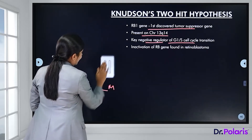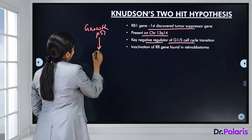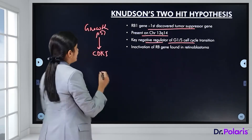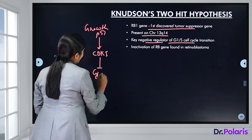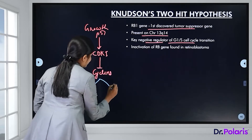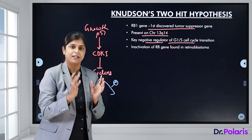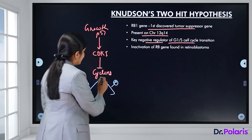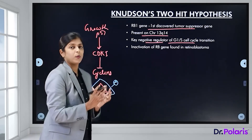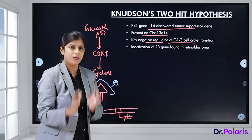When there are growth-inhibiting signals like P53, cyclin-dependent kinase inhibitors are stimulated, which prevent the action of cyclins. This leads to hypophosphorylation of the retinoblastoma protein. When hypophosphorylated, the retinoblastoma protein is active and binds to E2F, a transcription factor. When bound to E2F, the transcription factor is not freely available, resulting in no transcription and no cell growth or proliferation.